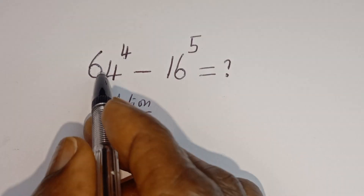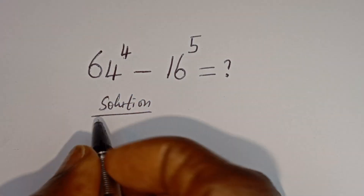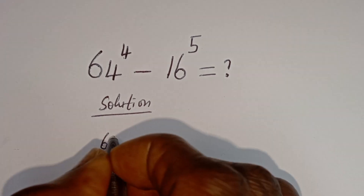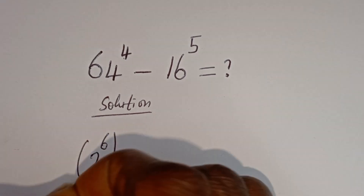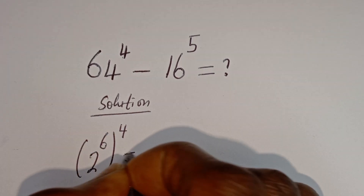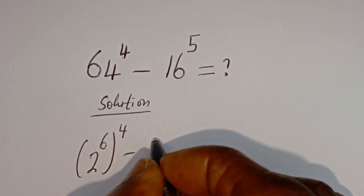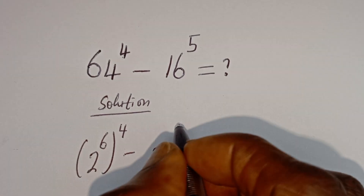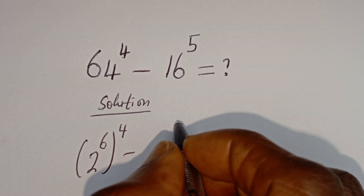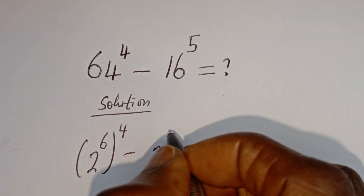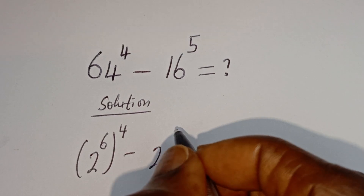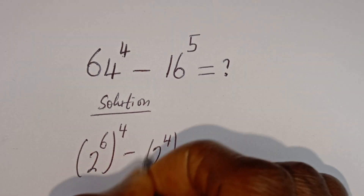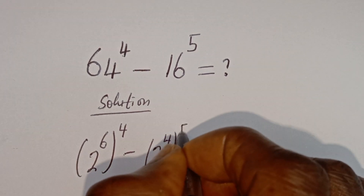64 can be written as 2 to the power of 6, raised to the power of 4, minus 16, which can be written as 2 to the power of 4, raised to the power of 5.